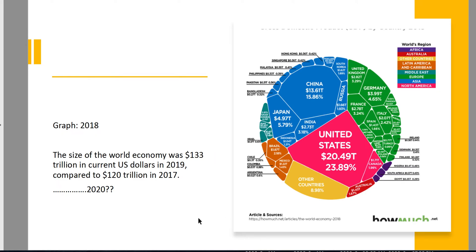So if we think about the size of the global economy, we can see that last year, 2019, the total global economy was roughly $133 trillion, measured in U.S. dollars, which was up from about $120 trillion in 2017. This year, 2020, we'll talk about this in Lecture 4. Due to COVID-19, we have a different story. Let's focus on the essentially pre-COVID-19 world economy.